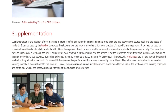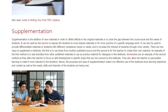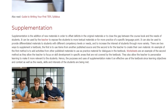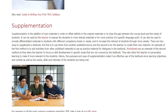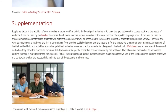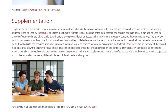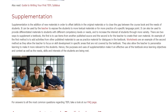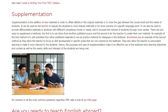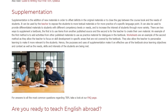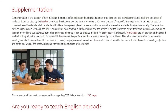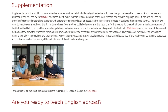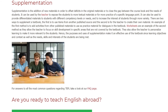There are two ways to supplement a textbook. The first is to use items from another published source and the second is for the teacher to create their own material. An example of the first method is to add activities from other published materials to use as practice material for dialogues in the textbook. Worksheets are an example of the second method as they allow the teacher to focus on skill development in specific areas that are not covered by the textbook.